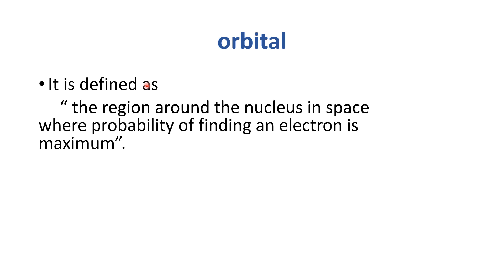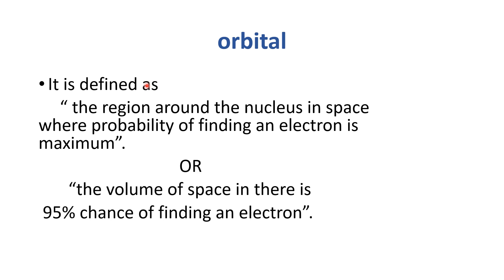Nucleus ke gird wo region, wo khas path jahan pe electron ke pa jane ke chances maximum hoon, usay hum orbital kehte hain. Or the volume of space where there is 95% chance of finding electron. Wo space jahan pe electron ke pa jane ke 95% chances hain, usay hum orbital kehte hain.